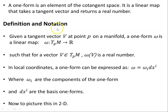Let's have a look at some definition and notation. Given a tangent vector V at a point p on a manifold, a one-form ω is a linear map from the tangent space to the manifold at point p to the real numbers, such that for a vector V belonging to T_p M, ω(V) is a real number.